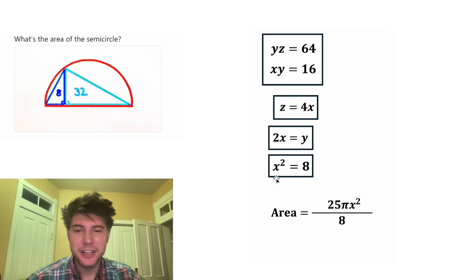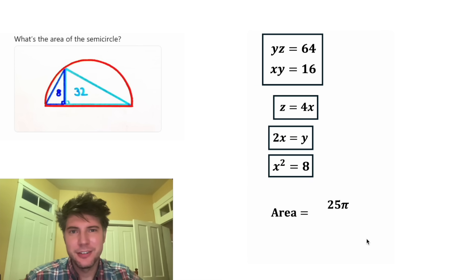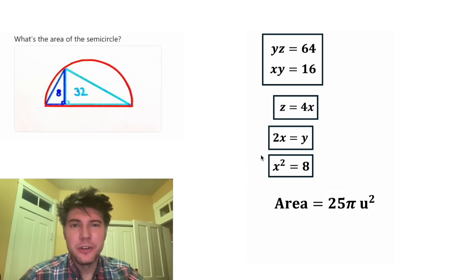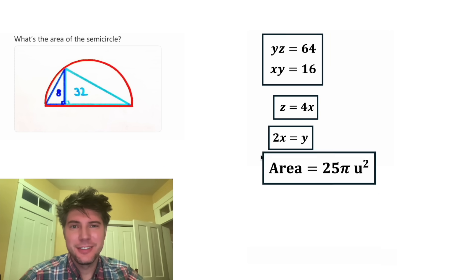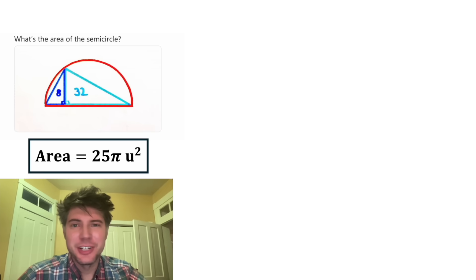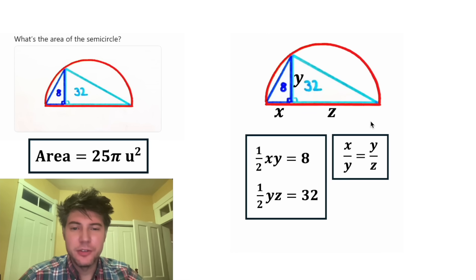But right here, we know that X squared is equal to 8. So for this X squared, let's plug in 8. Now this 8 and this 8 will cancel each other out. And now we have the area equals 25 pi. Let's give it a label of units squared and put a box around it. And this is the answer to our question. The area of this semicircle is 25 pi units squared. And we figured all that out using this information. How exciting.